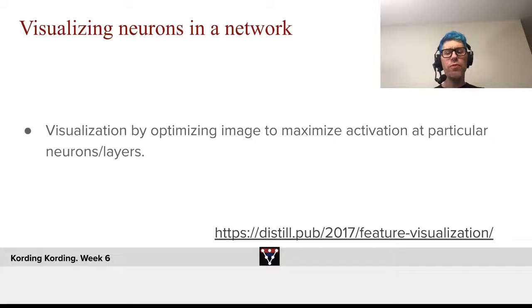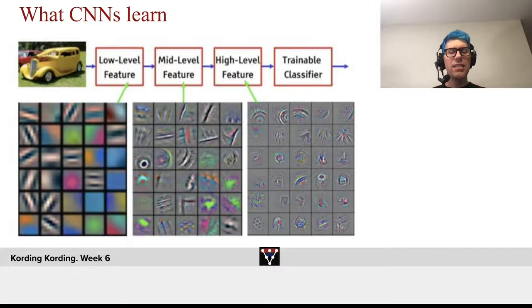So, there's a beautiful literature that tries to visualize these aspects. And here's, for example, a set of findings from such a study where you can look at very low-level features on the left-hand side. What is that there?